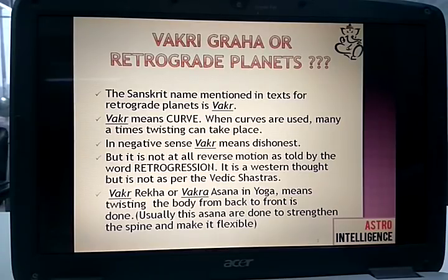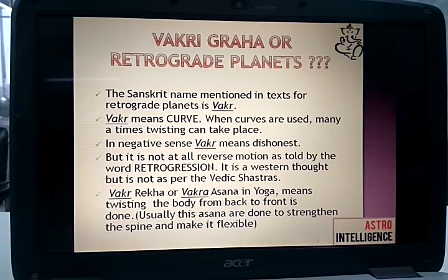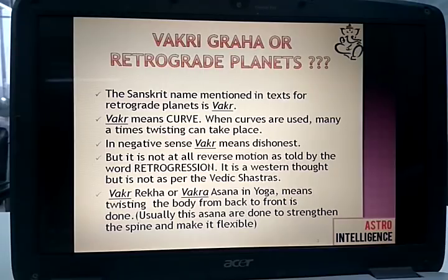So there is a contradiction between our Vedic Jyotish and Western Jyotish, because in our text the word used is Vakra, and Vakra means curve. Or at maximum, what you can get from the meaning of Vakra is twisting. When curves are multiplied or present in an up or down fashion, twisting can take place. And in a negative sense, Vakra means dishonest. But it is not at all reverse motion as told by the word Retrogression — that is a Western thought, not as per Vedic Shastras.